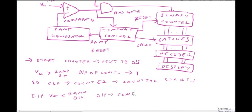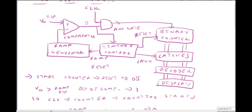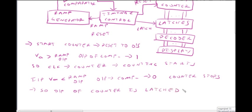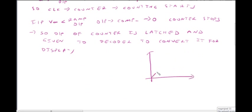Output of comparator is 0, and gate input is 0, so AND gate output is 0. The clock pulses counter will stop. Counter stops and the output of the counter is sent to the display on the digital display.